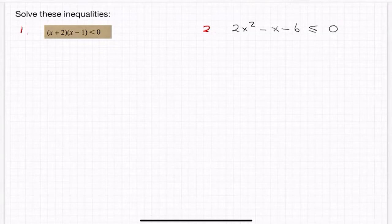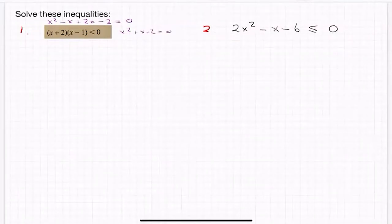It would have been, if I multiply it out, x by x is x squared, x by minus 1 is minus x, plus 2x. What's that? Minus 2 is equal to zero, so it would have been x squared plus x minus 2 is equal to zero. So somebody's gone to the bother of factorizing it for us, which makes it easier to solve.